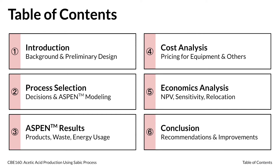Since past August, our team has evaluated the economic viability of incorporating a process patented by Stabic into our company's acetic acid manufacturing facility. Today, we will first propose our working process modeled by Aspen, which was continuously optimized using previously acquired process design heuristics. Then, we will present our Aspen results and cost analysis to evaluate the design process's estimated profitability and economic feasibility. Finally, we will provide the board our final recommendation on whether our company should implement the Stabic process to produce acetic acid.